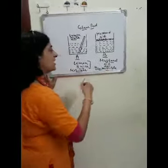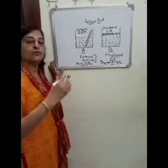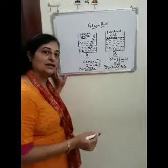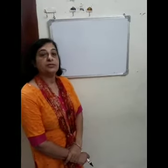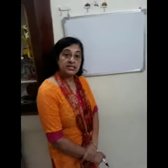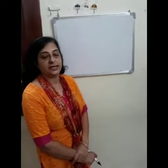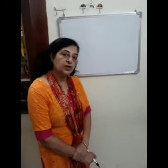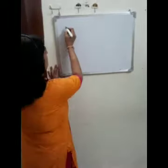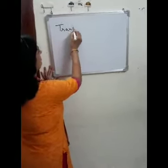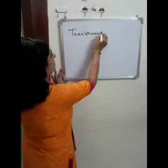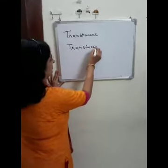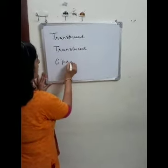Through this activity, we can easily differentiate between miscible and immiscible liquids. Now, we will discuss about different types of objects on the basis of transparency. Objects can be categorized into three groups: transparent objects, translucent objects, and opaque objects.